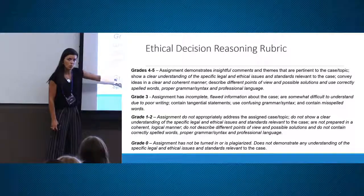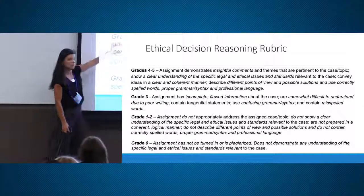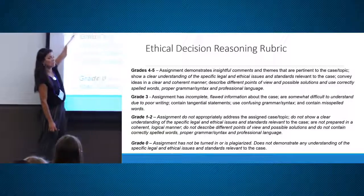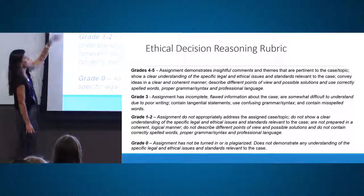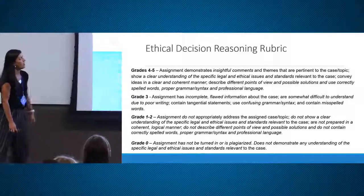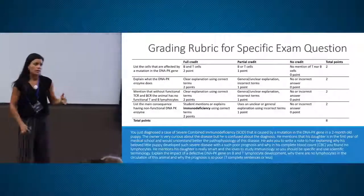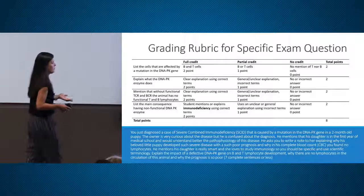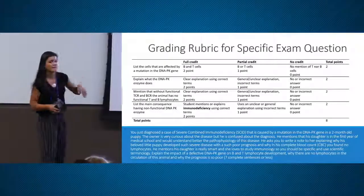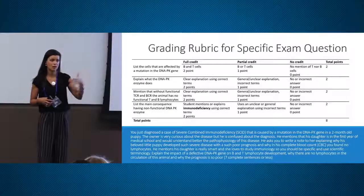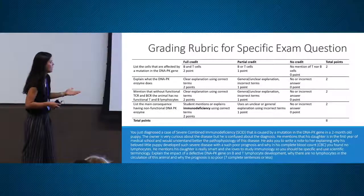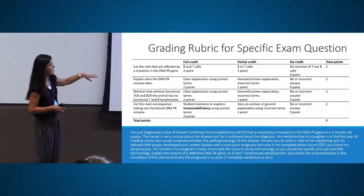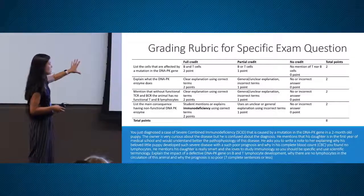This rubric goes in Canvas and in my syllabus. Grade zero is described, what grades one and two are, what grade three is, and grades four and five — exactly how well the idea is presented and how well the assignment is written. In that case, I care about how students express their opinions.